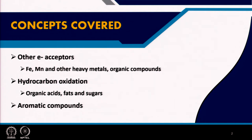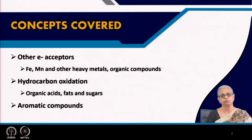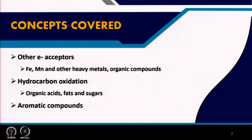In this lecture we are going to look at some other alternative electron acceptors. We will take a look at iron, manganese, several other heavy metals, and organic compounds — all of these can serve as electron acceptors. We will also look at different metabolic pathways for hydrocarbon oxidation including organic acids, fats, and sugars, and finally we will end with aromatic compounds and how they are biodegraded under aerobic as well as anaerobic conditions.